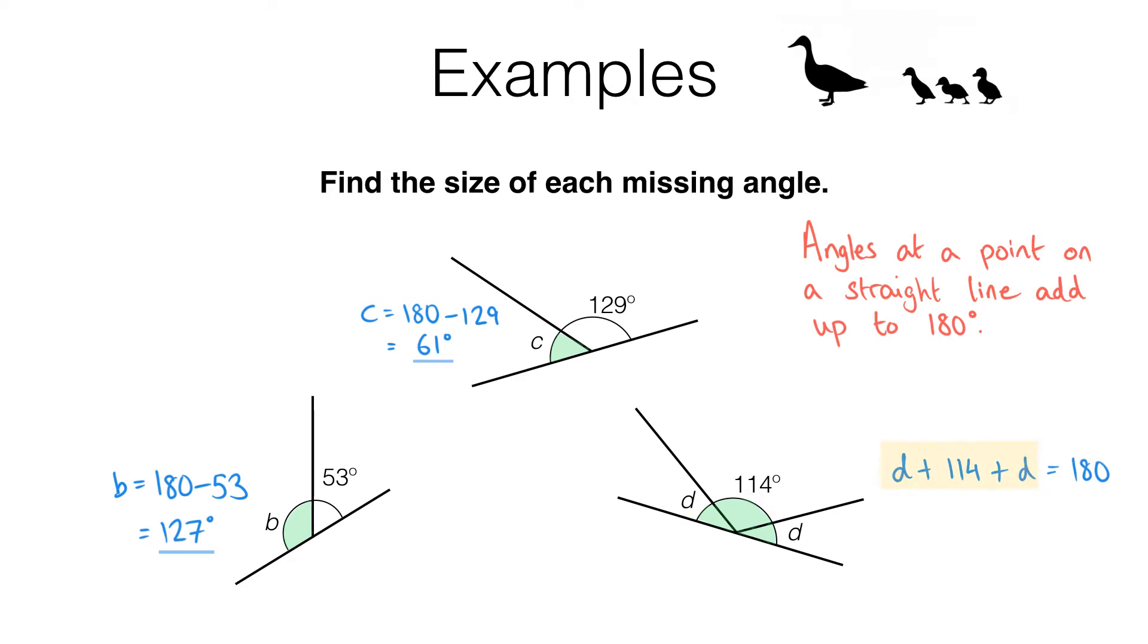Now I can simplify this a little bit. D plus D is 2 lots of D which I can write as 2D. So I've got 2D plus 114 adding up to 180 degrees. Now if I've got 2D plus 114 adding up to 180 degrees that means 2D must be 180 minus 114 degrees. And if we work out 180 minus 114 we find that that is 66 degrees. And finally if 2 lots of D is 66 degrees then to find 1 lot of D I just need to divide by 2. That means D equals 33 degrees.